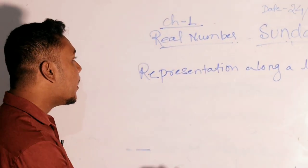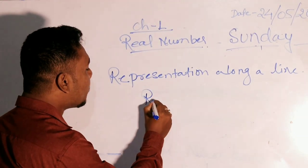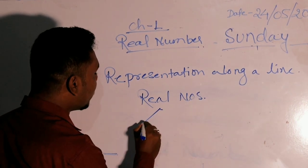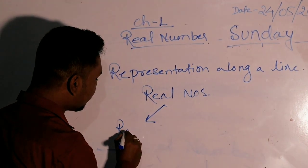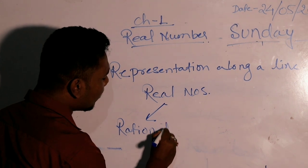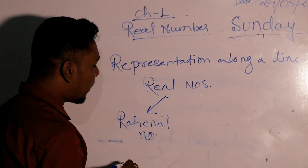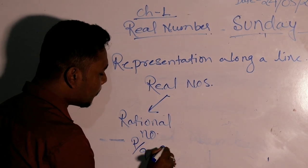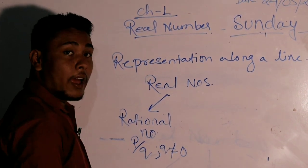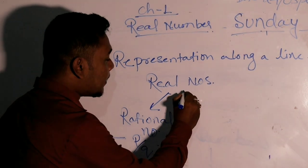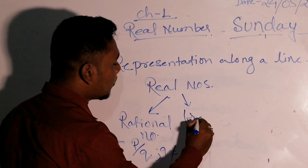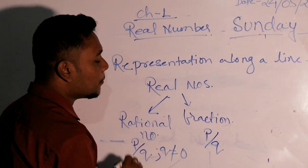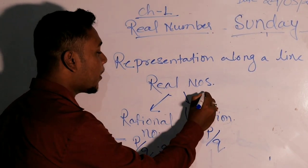The real numbers is further divided into three parts. Number one: rational number - that can be expressed in the form of p by q where q not equals to 0. Next is fraction, in the form of p by q.